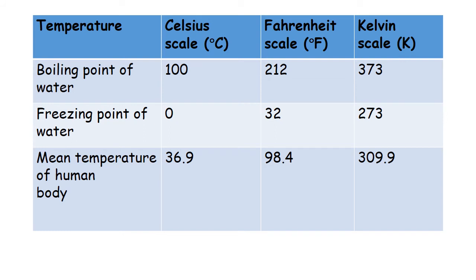The table contains Celsius, Fahrenheit, and Kelvin scales. The boiling point of water is 100°C, 212°F, and 373 K. The freezing point of water is 0°C, 32°F, and 273 K. The mean temperature of the human body is 36.9°C, 98.4°F, and 309.9 K.